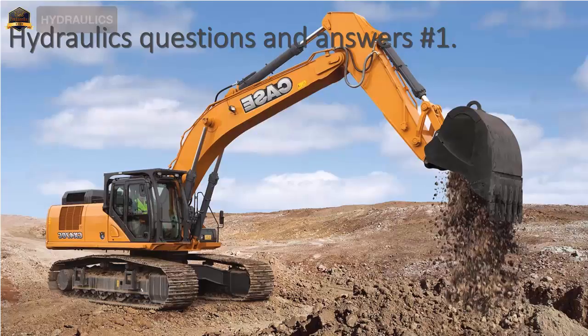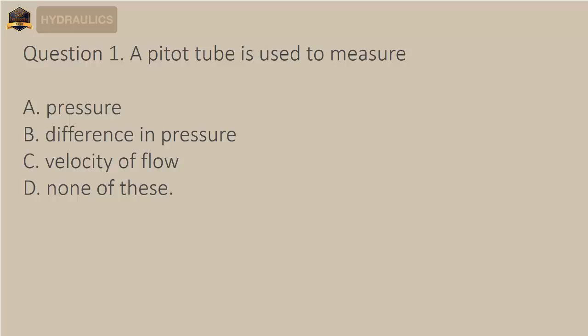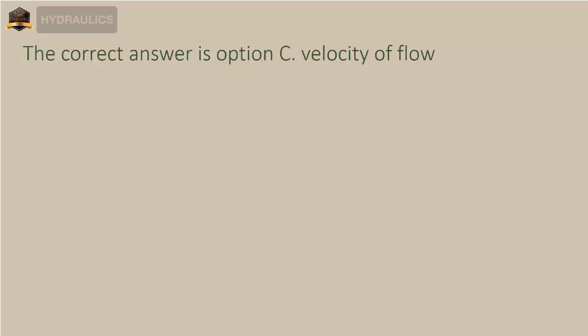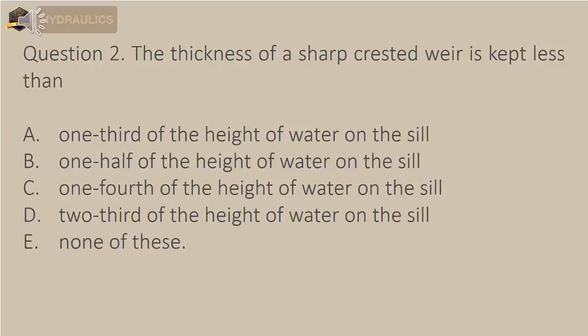Hydraulics questions and answers. Question 1: A Pitot tube is used to measure — A) pressure, B) difference in pressure, C) velocity of flow, D) none of these. The correct answer is option C: velocity of flow.